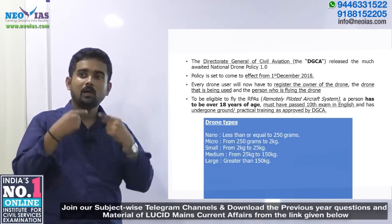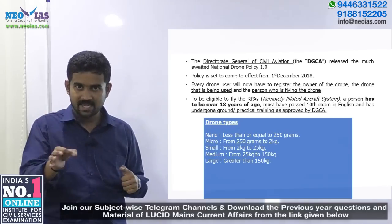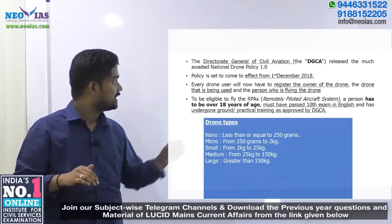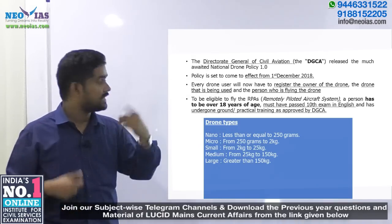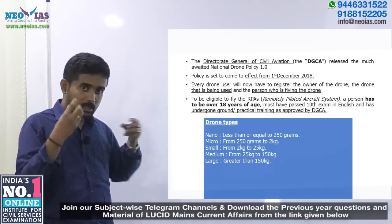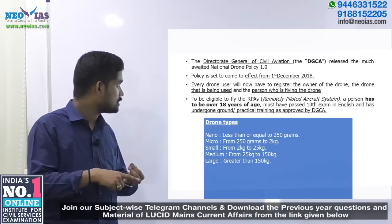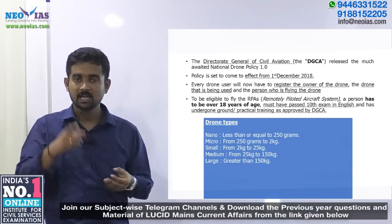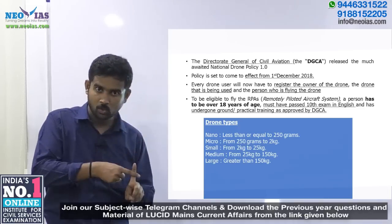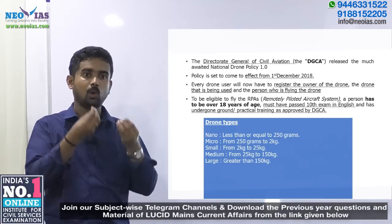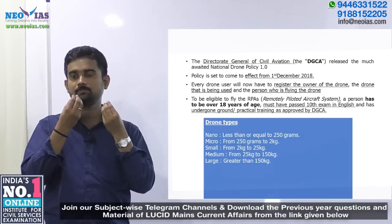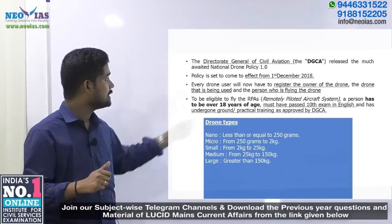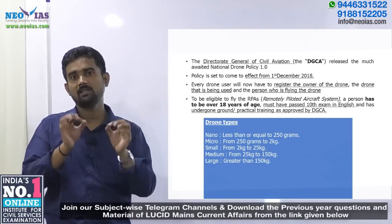Now, what are some of the features of this policy? Every drone that has to be flown in our nation needs to be registered. There should be a registry of three entities: the owner of the drone, the drone itself — what type it is and its specifications — as well as the person who is going to fly the drone.